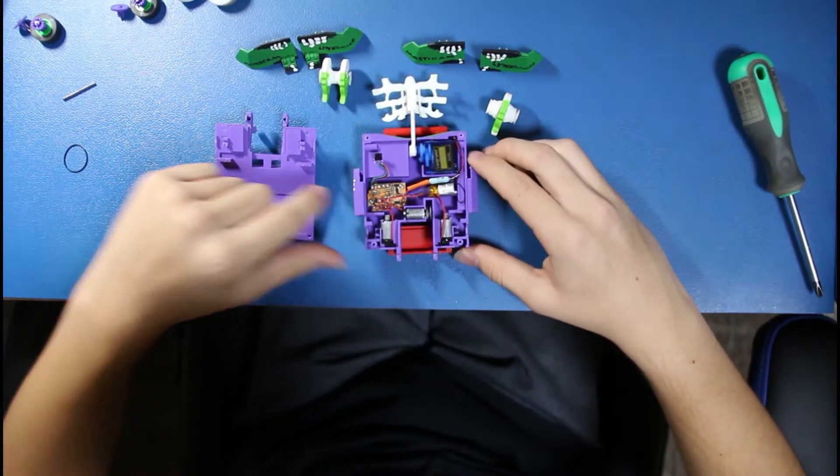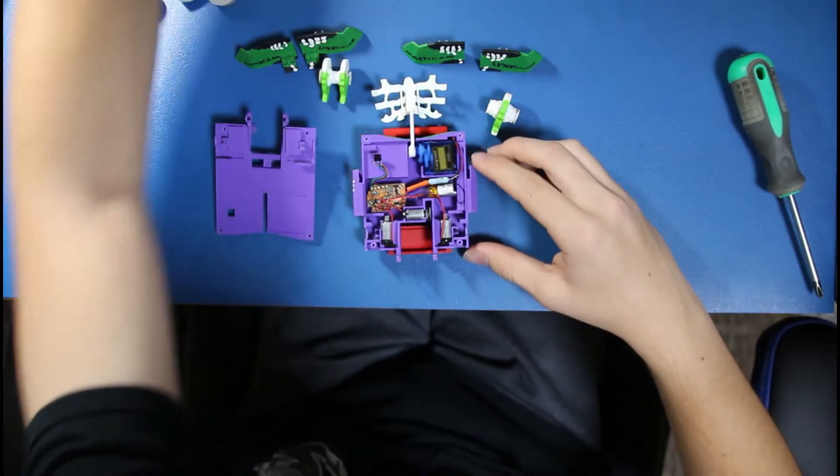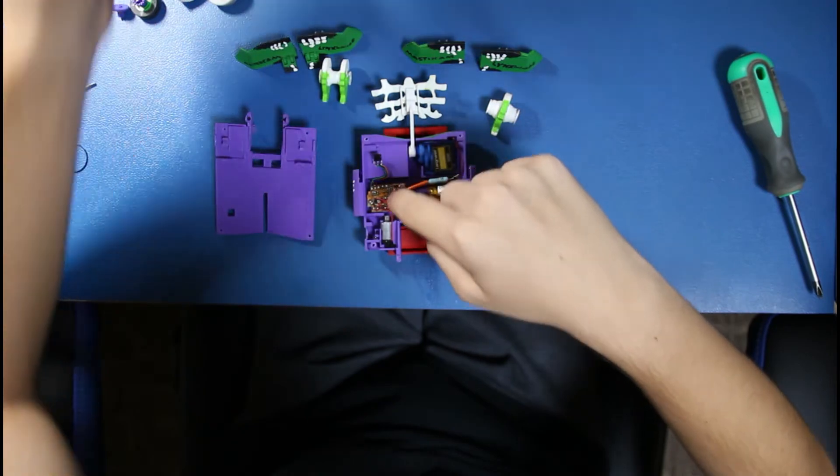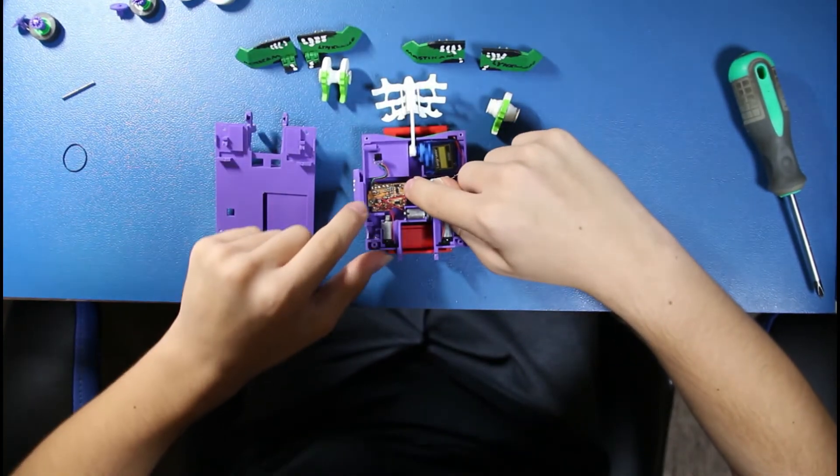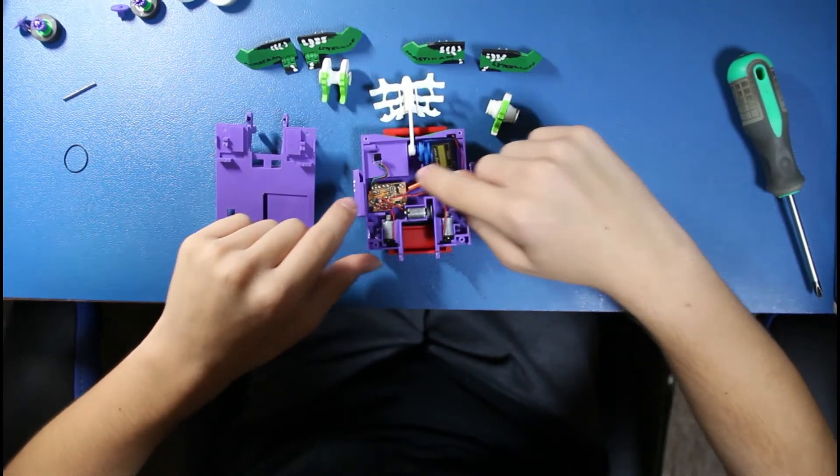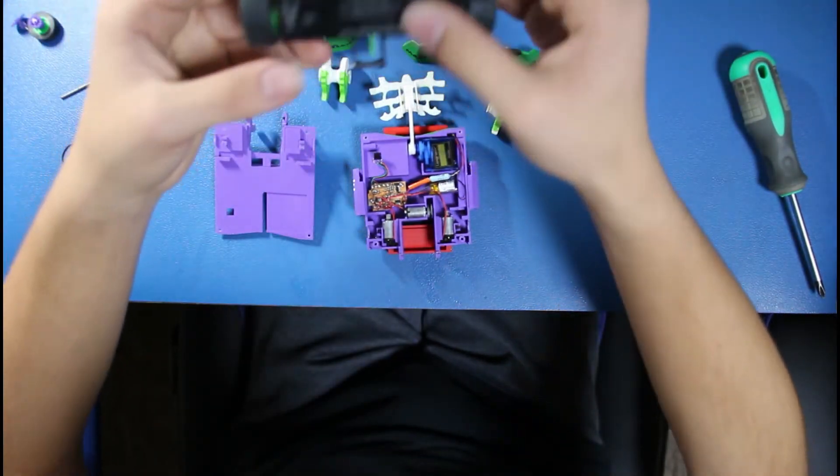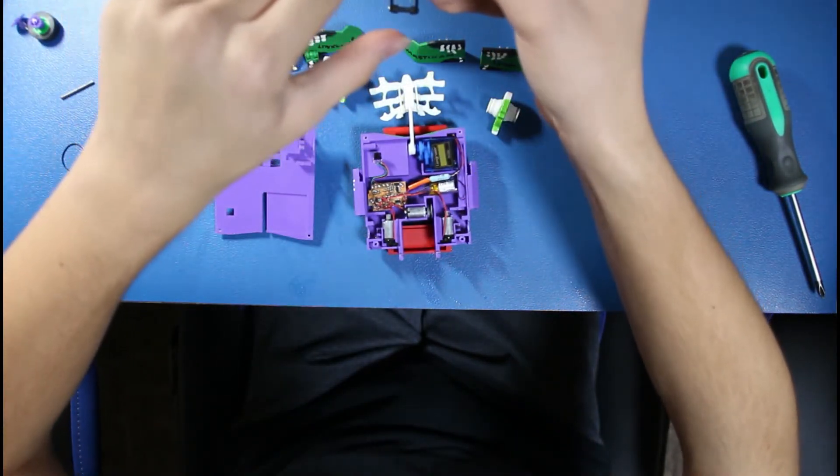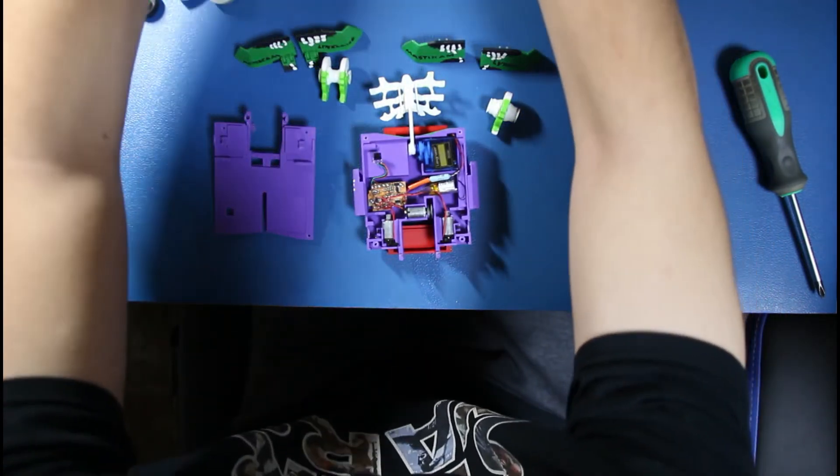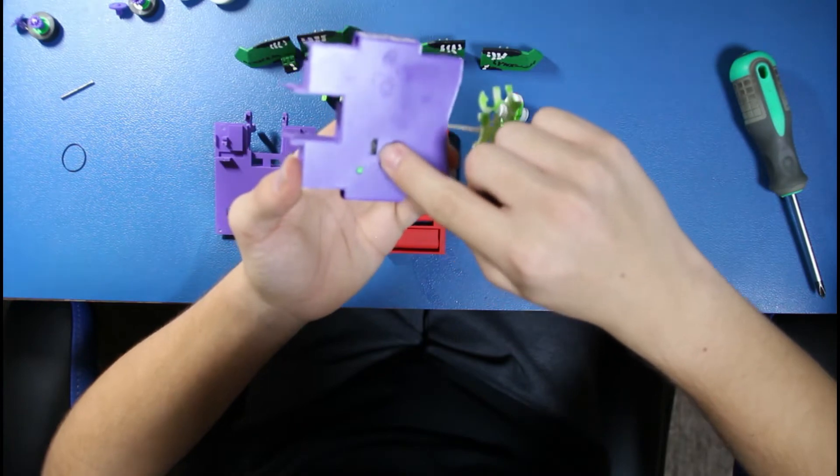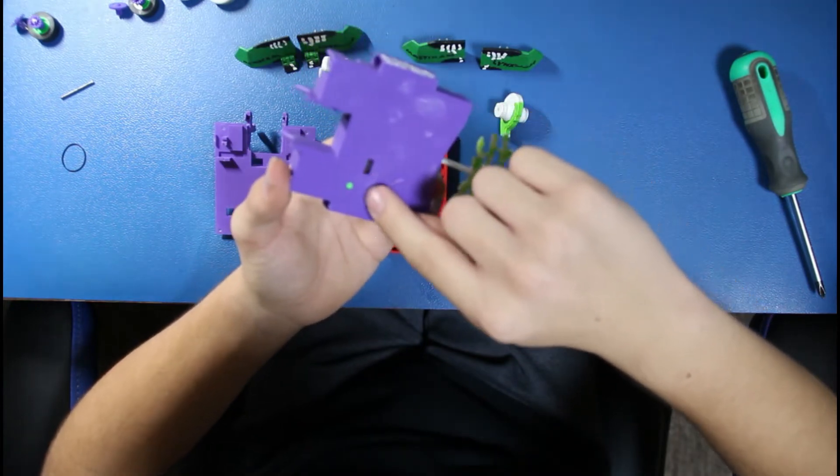You just use the two screws from the Sawblaze circuit board and just screw it into the two holes that are there. You also... By the way, I forgot to mention. You take the button from the bottom of the Sawblaze, the on-off button, and you stick that in the bottom of the Witch Doctor. So there's the charging hole and then there's the button.